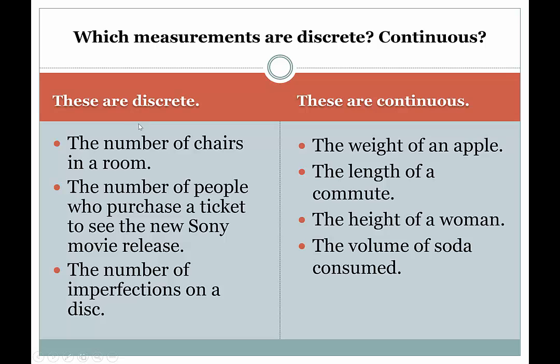Here's another little review here. So each of these is discrete. The number of chairs in a room, you'll have either like five chairs in a room or two hundred chairs in a room, but you can't have a fraction or decimal amount of chairs in the room. Number of people who purchase a ticket to see a new movie, makes no sense to say pi amount of people purchased a ticket. Number of imperfections on a disc, there's going to be a finite number, certainly countable.